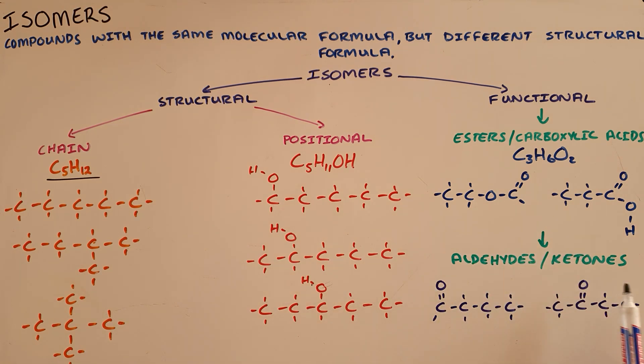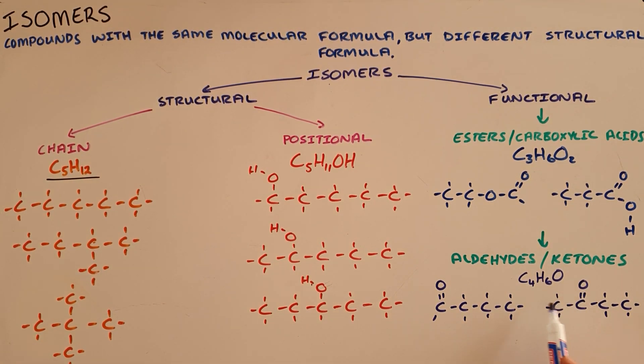Because all that is changing here: in an aldehyde we have the formyl group which is where that carbonyl is placed on the first carbon, and in a ketone we have that carbonyl group not on the first carbon. Once again, both of these have exactly the same molecular formula, that being C4H6O.